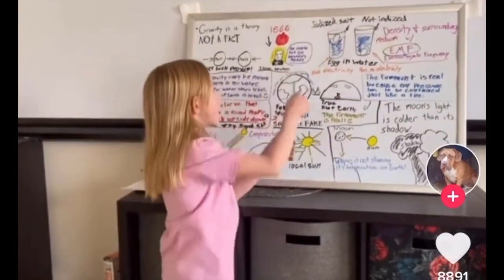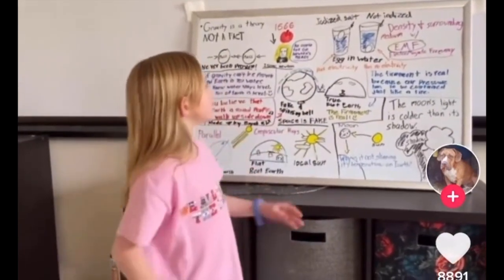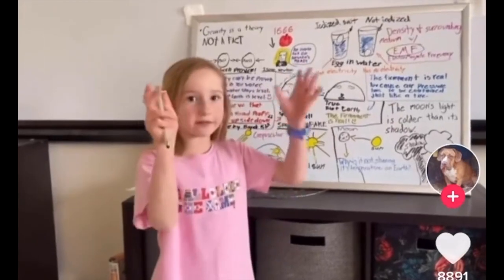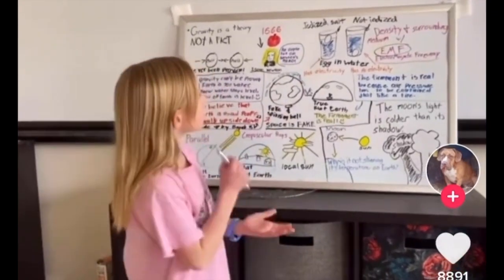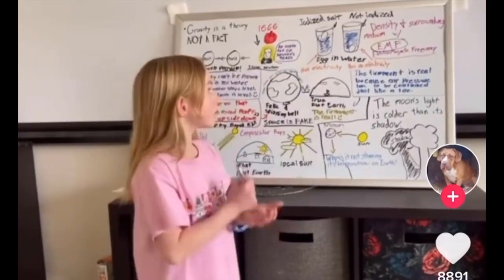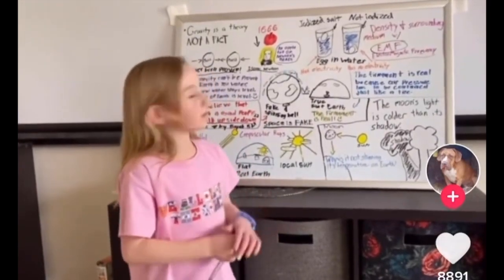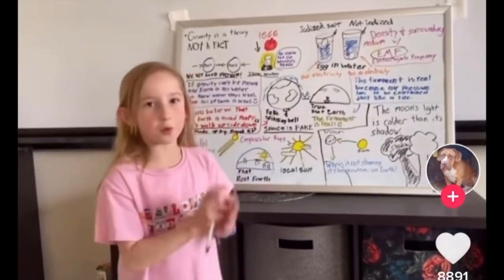This one has iodine salt, and it has electricity because electricity is pushing the egg up. On the other one, it has no electricity in it because the egg is denser than the water.